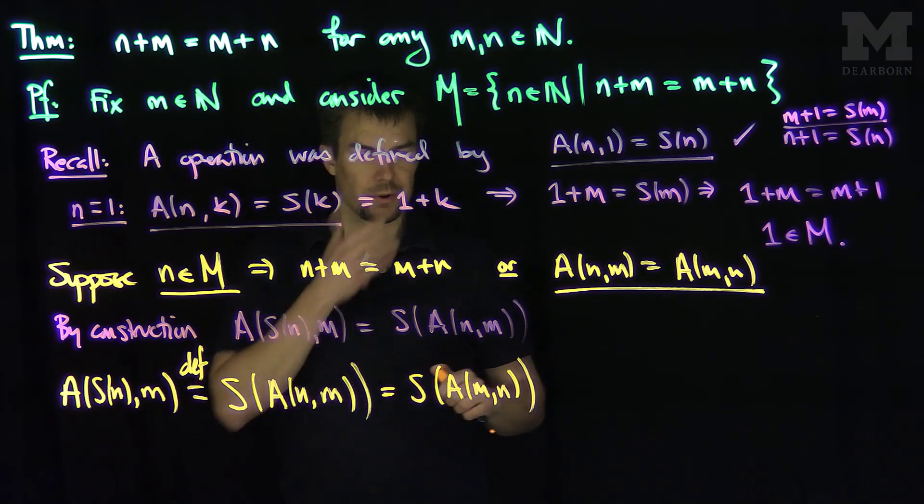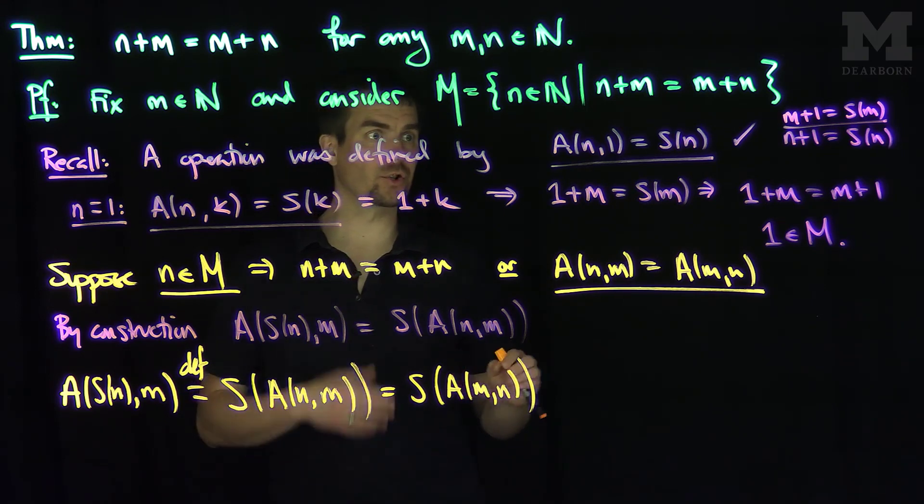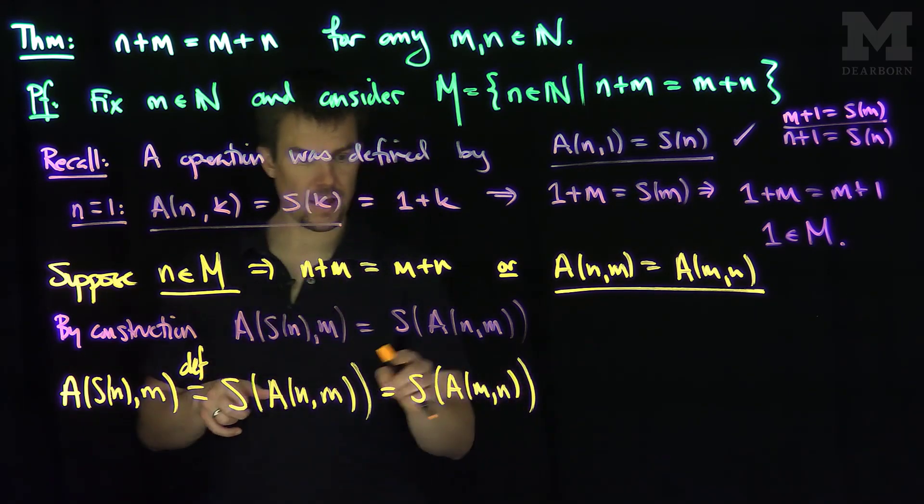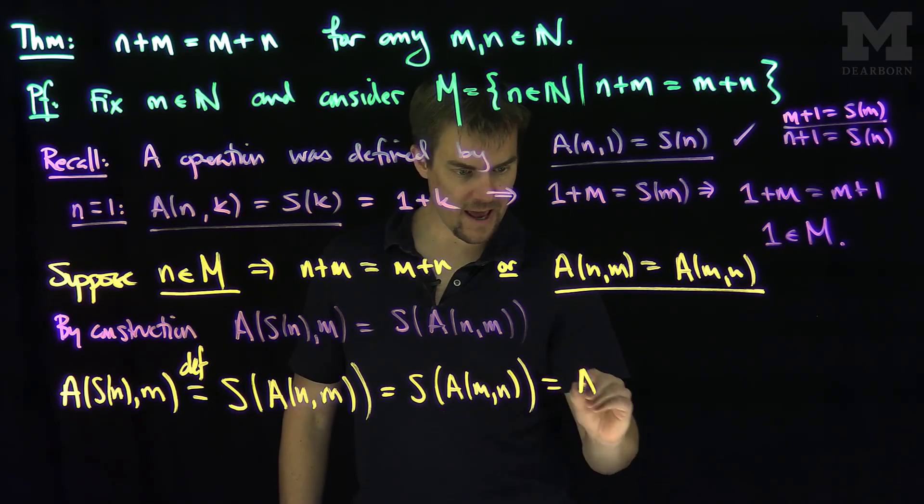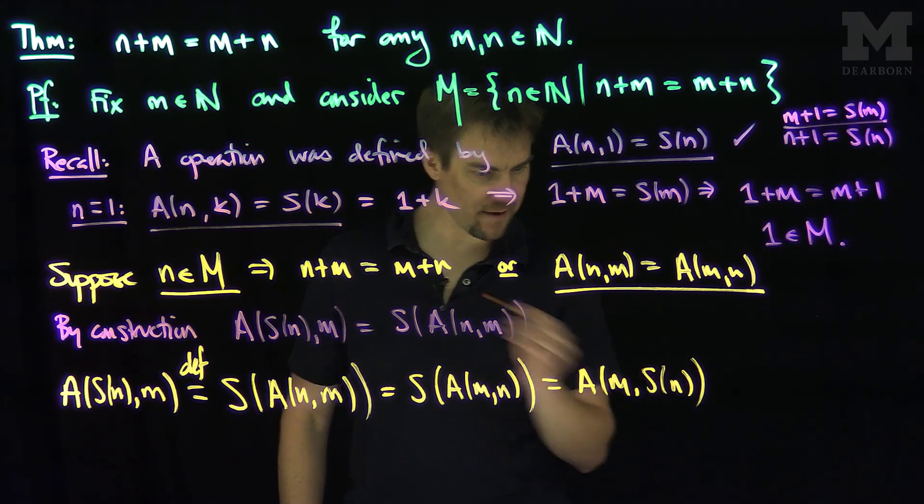And now, what can we do? We can put the successor on the n. So what we'd like to show, we'd like to show that m plus S(n) is the same. So this is exactly equal to A of m and S(n).